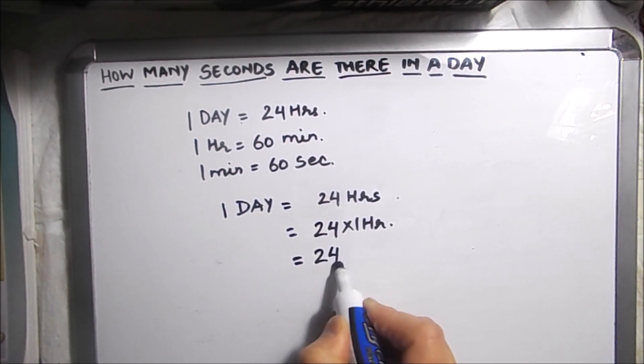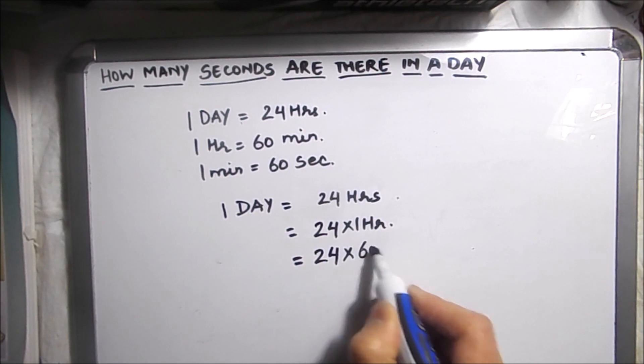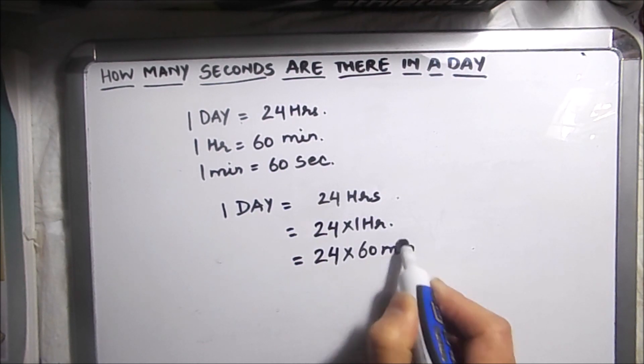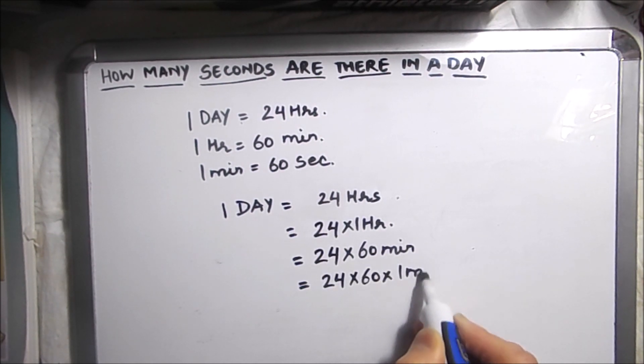24 times one hour is 60 minutes, or we can write it as 24 times 60 times 1 minute because we have to change this minute to seconds.